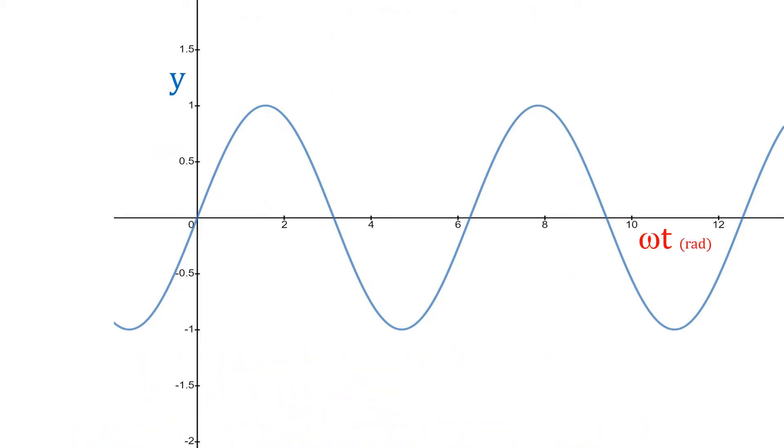Here's an animation that shows us how y changes as the angle increases, the angle being omega t in radians. Half a period is pi radians. A full period is 2 pi radians.